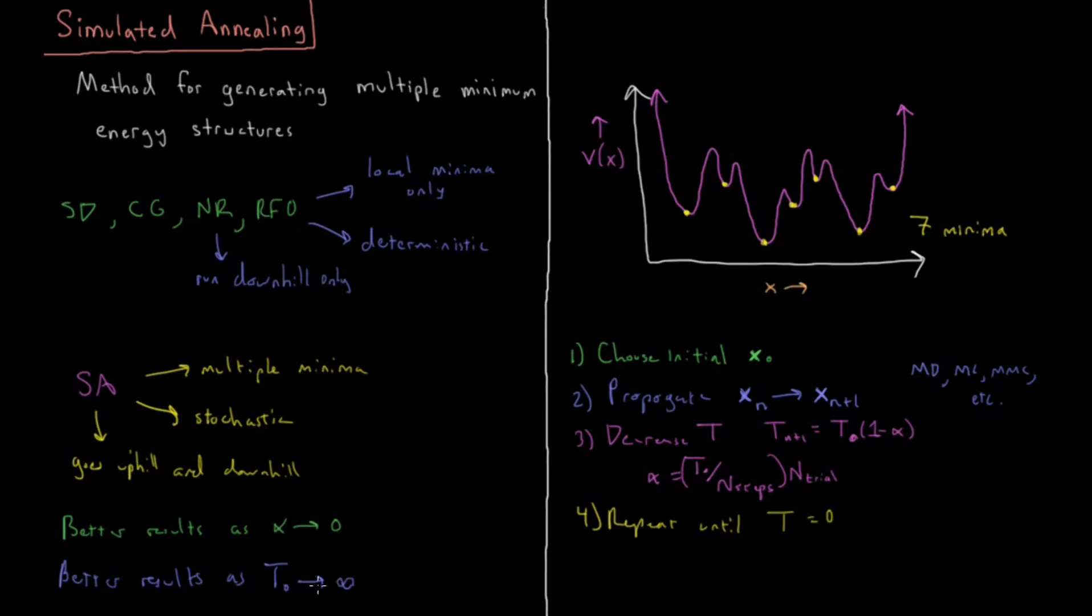So in the limit that initial temperature is infinite and alpha is zero or very close to zero, then I get basically every possible minimum I get with some probability.